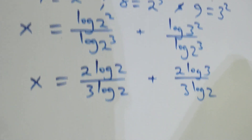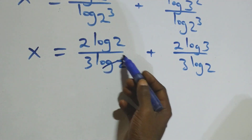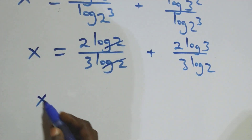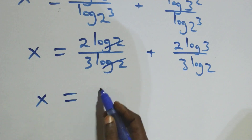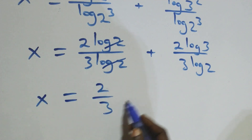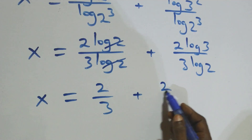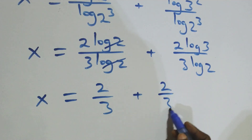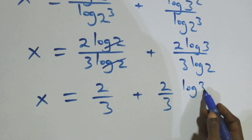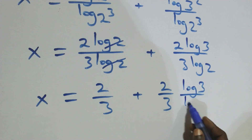From here, log 2 cancels with log 2 in the first fraction and 2 over 3 is left. That is, x equals to 2 over 3 plus 2 over 3 multiplied by log 3 over log 2.